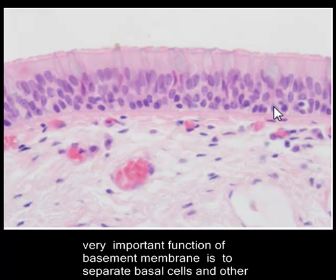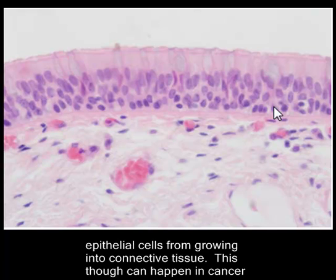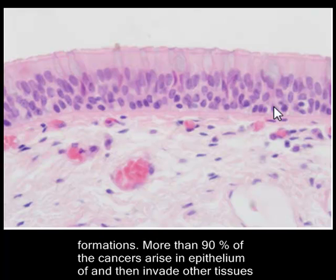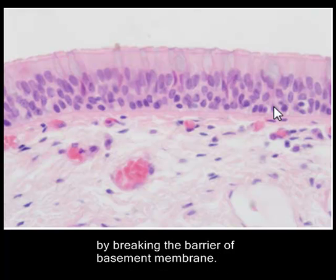Another very important function of the basement membrane is to separate basal cells and other epithelial cells from growing into connective tissue. This can happen in cancer formations — more than 90 percent of cancers arise in epithelium and then invade other tissue by breaking the barrier of the basement membrane.